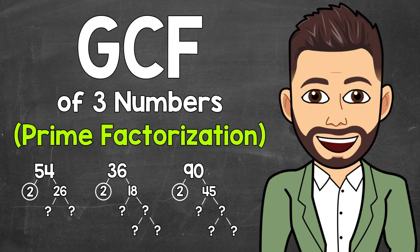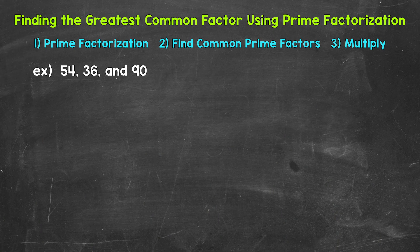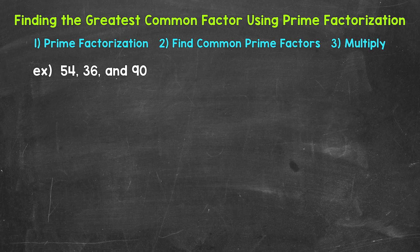Welcome to Math with Mr. J. In this video, I'm going to cover how to find the greatest common factor of three numbers using prime factorization. I like using this strategy and find it helpful when working with numbers that are a little larger in value. The strategy of listing out all of the factors of the numbers in order to find the GCF can be kind of difficult and time-consuming when working with larger numbers. So this is a different approach, a different strategy to be familiar with when it comes to finding the greatest common factor.